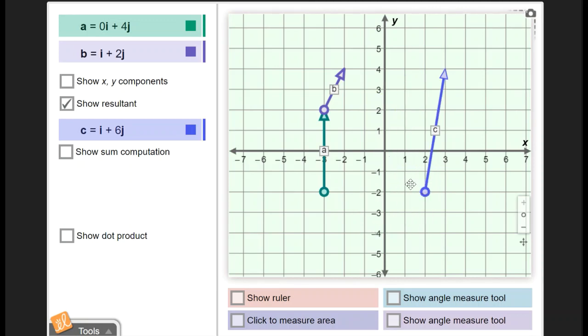If you'd like, you could do show the sum computation for how it would add these i and j values. But this is something that we don't do in class, so I'm not going to recommend that you do that. Additionally, down here there's another way of adding vectors together called the dot product.